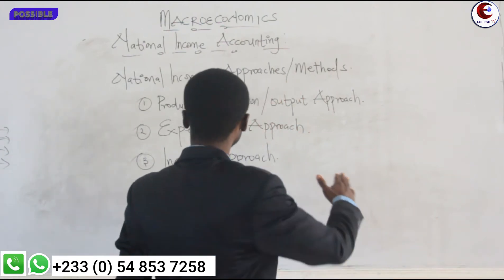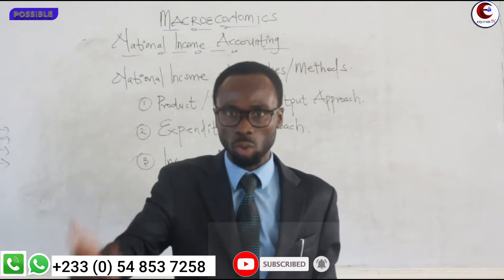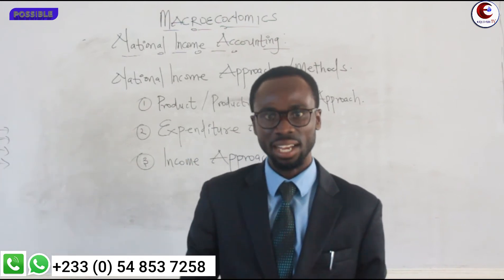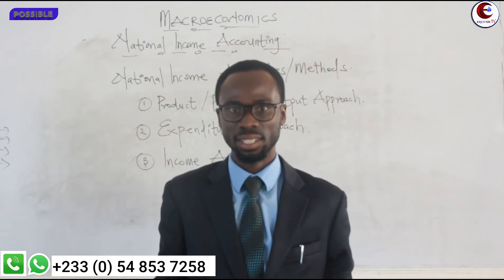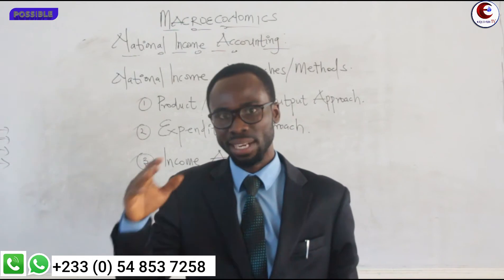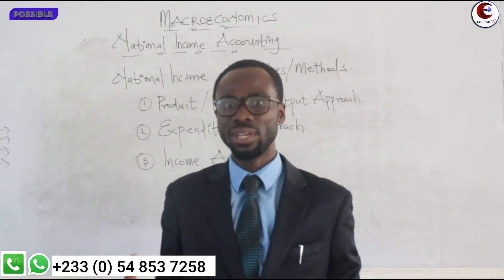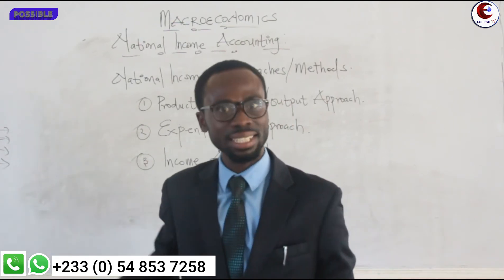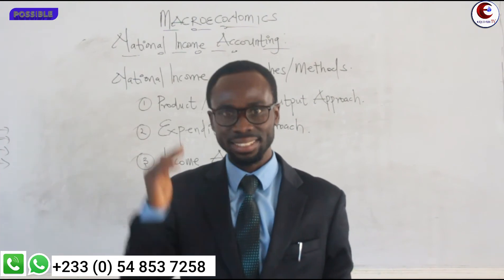Under the product or production or output approach, we focus on the various sectors of the economy. We give reverence to the primary sector, the secondary sector, and the tertiary sector, and we put all of them together. When we put all of them together, the answer that we get would be GDP at market price. Then we add net income from abroad and get GNP, subtract depreciation and get NNP, and then we get NNP at factor cost.